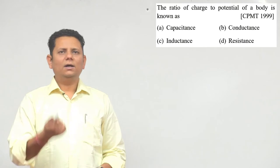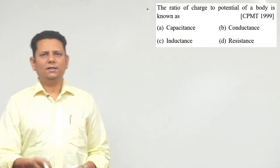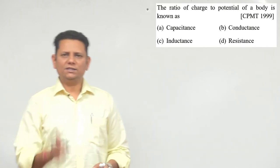Next question. The question says: ratio of charge to potential of a body is known as — option A: capacitance, option B: conductance, option C: inductance, or option D: resistance.